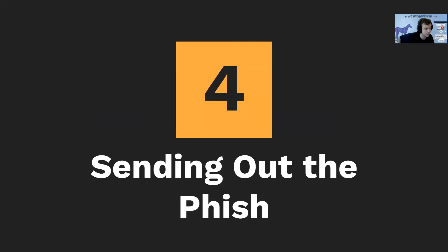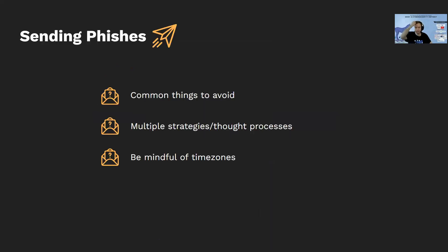Now I'm going to go over actually sending out the phish. This is essentially an encapsulation of everything we've gone over — taking from the OSINT phase, the social engineering phase, and using the infrastructure we set up. There are some common things to avoid: since we picked Saul Soper as someone to impersonate, if we found on social media that he's on vacation, we don't want to be sending an impersonation email from him, as that would get caught out very quickly by recipients who see he's on vacation.